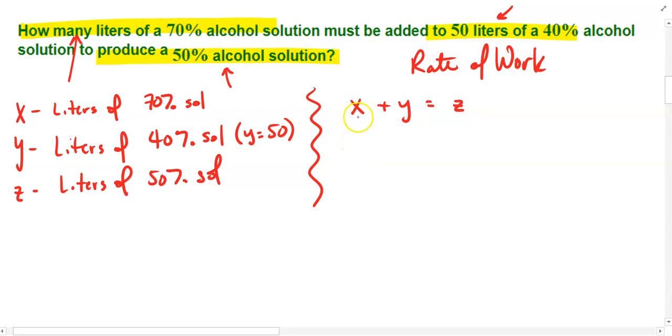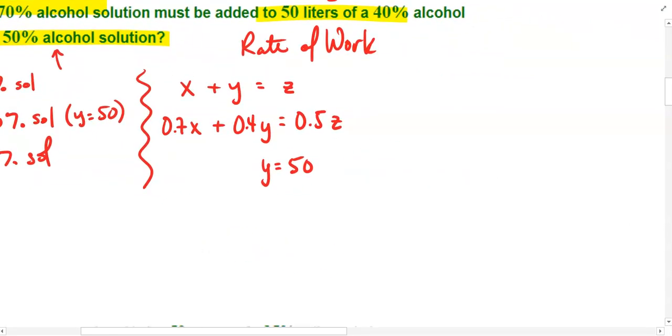If we want to consider the alcohol component, we might say something like this. So, this is 0.7 for 70% of x is alcohol, and 40%, so 0.4 of y is alcohol, and the end result is going to be 0.5 of z is alcohol. I think if we create our third line here, simply stating that y equals 50, then this is a system of equations that we can work with.